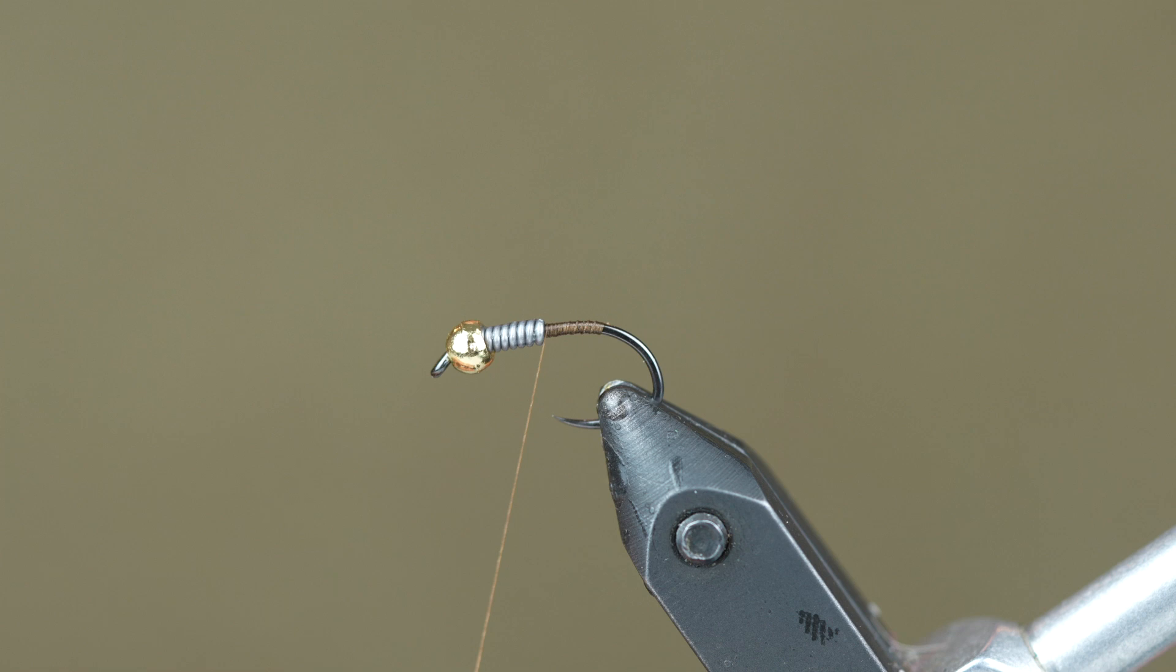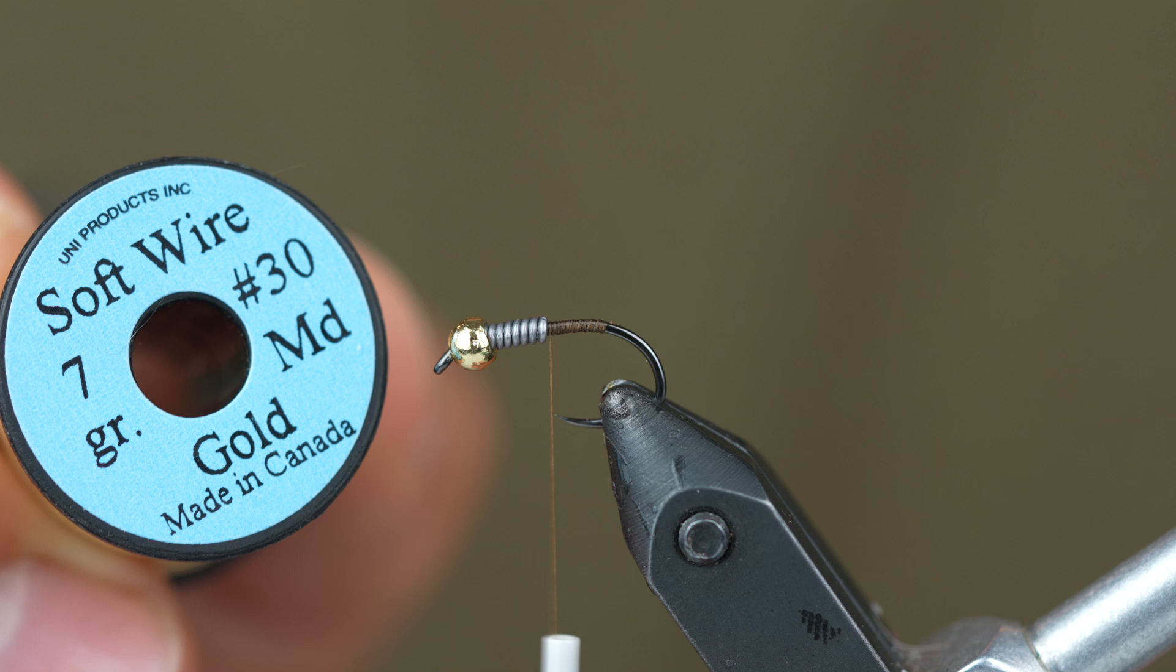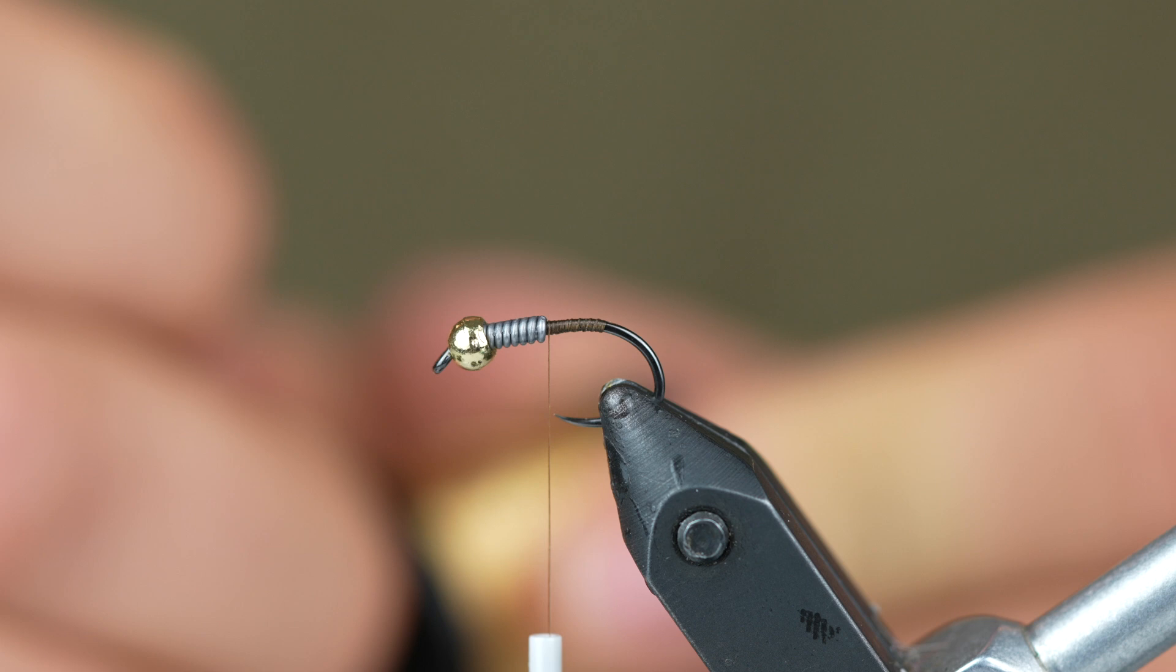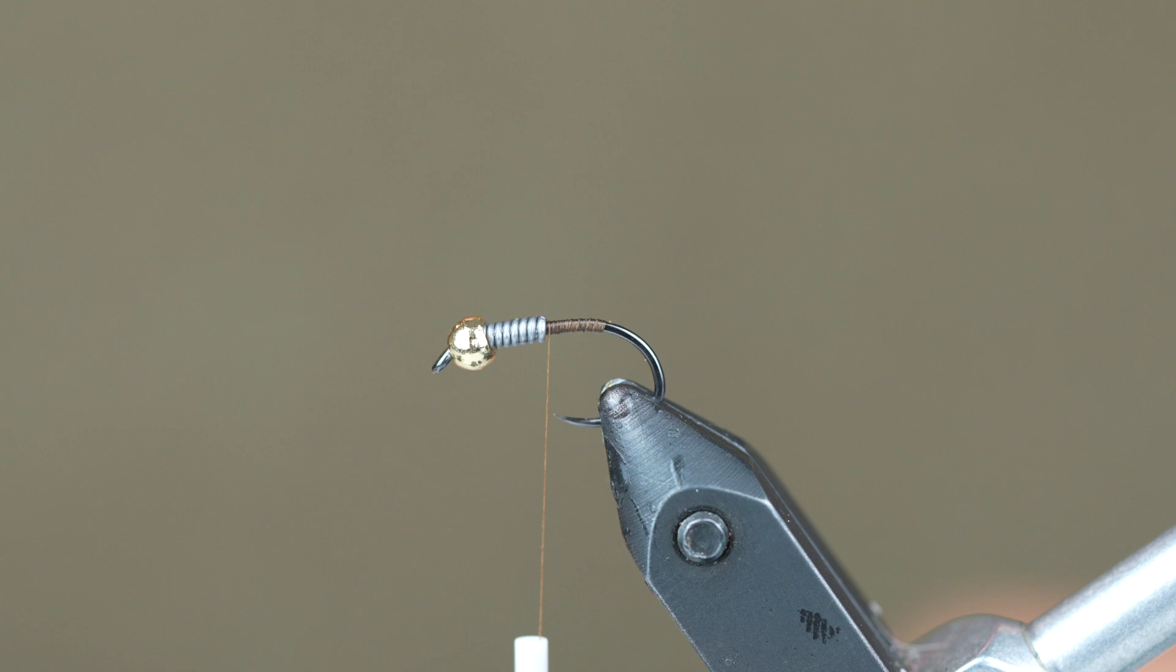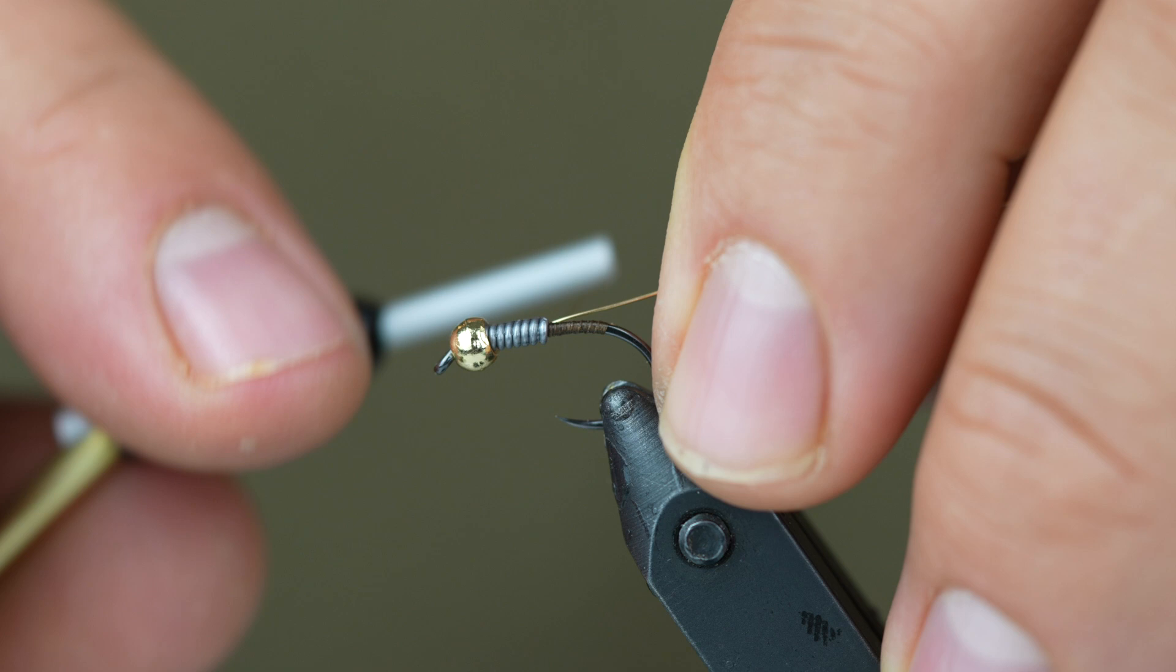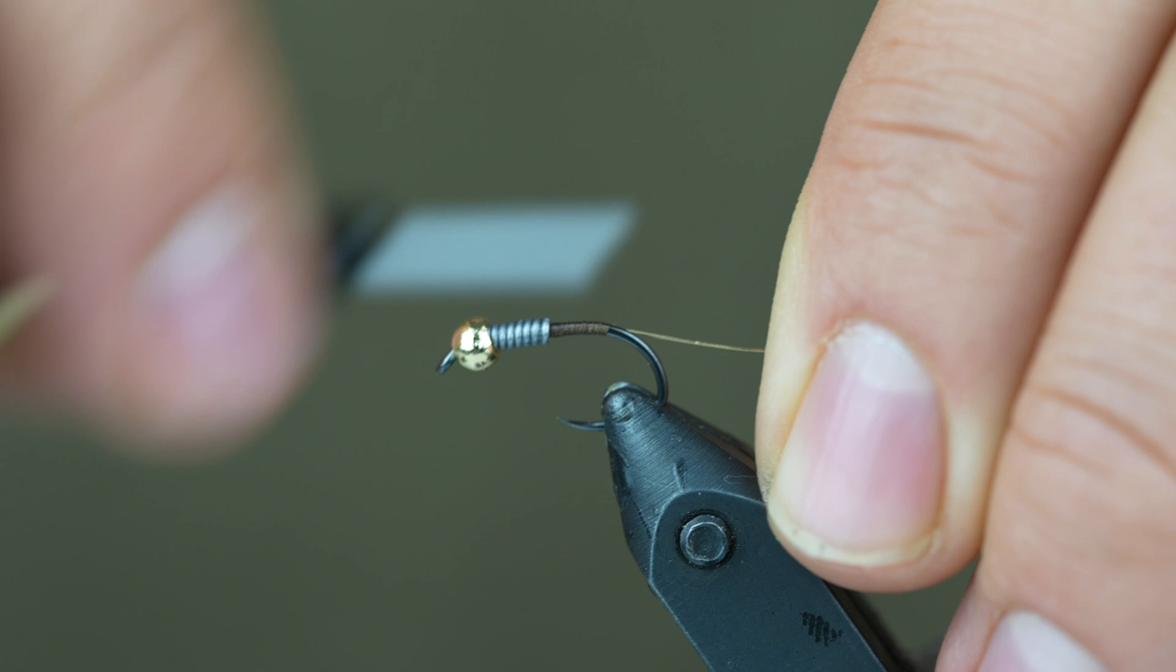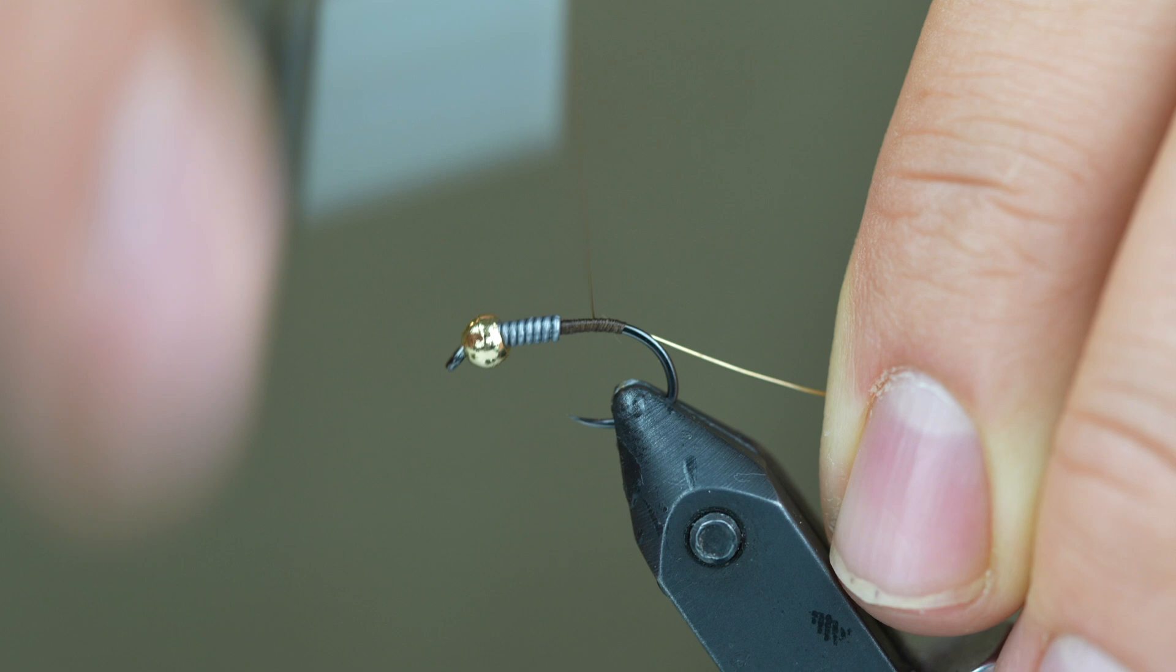For our rib we're going to be using Uni Softwire in the medium size and in a gold color. You pretty much just need about one revolution of that. We'll go ahead and tie that in, tuck it right up against the back of the lead wire, and then wrap it back to where you want the body to start.